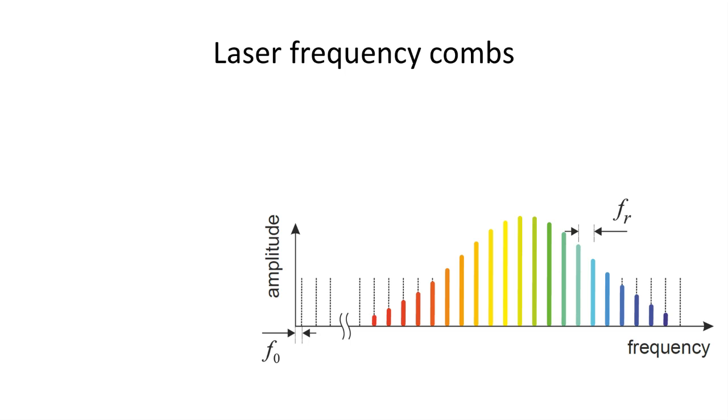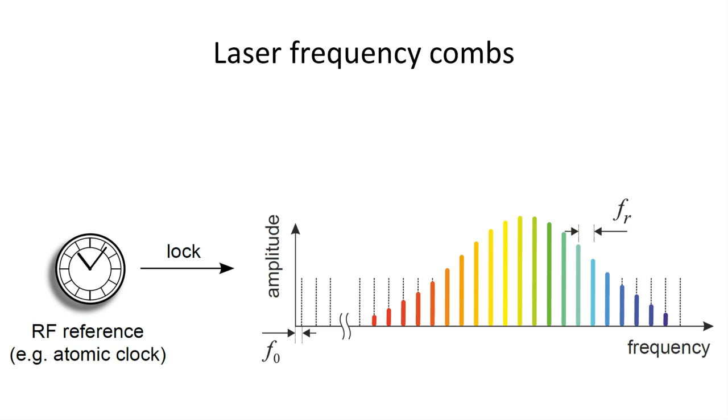The spectrum of a laser frequency comb consists of a series of sharp, evenly spaced spectral lines. The laser that generates the frequency comb is stabilized to an accurate radio frequency reference such as an atomic clock. The optical frequencies of the lines are then known to an extreme accuracy given by the radio frequency reference.